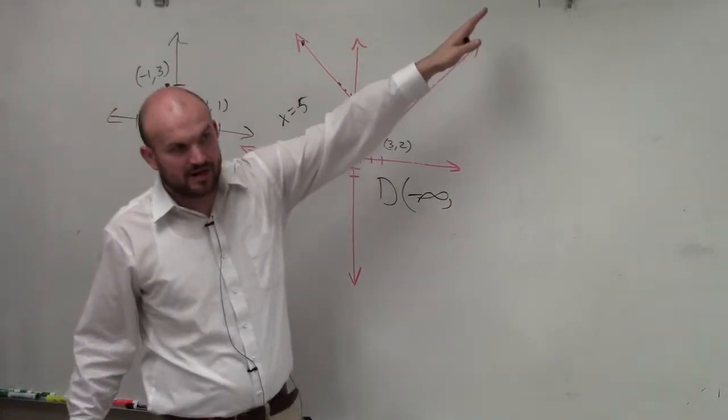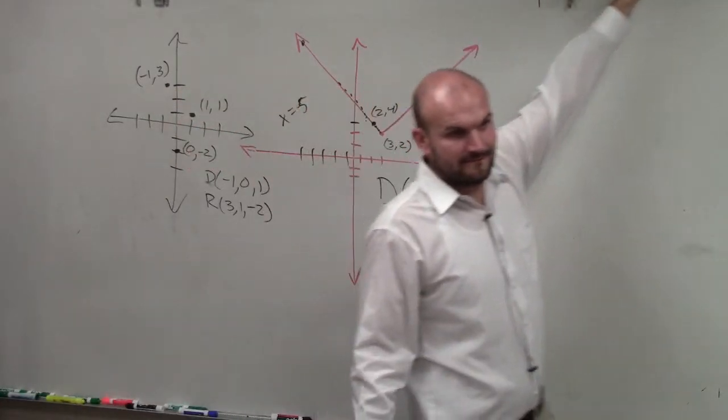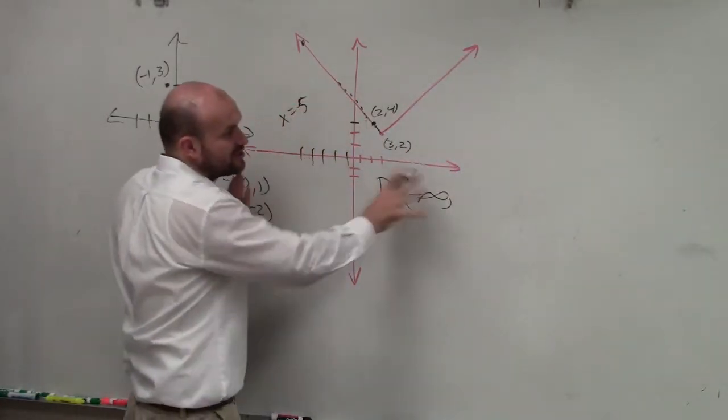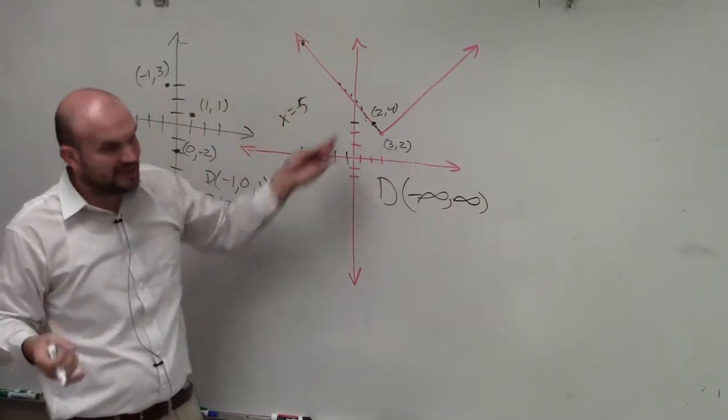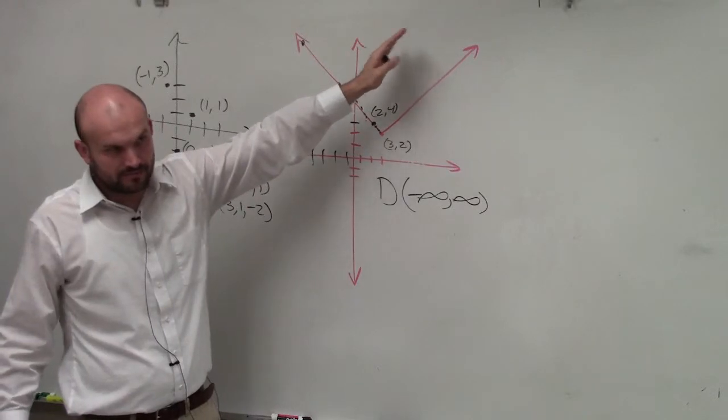Going to the right, how far does this graph go? Infinity. The x values, there's no number, there's no x value that this graph will not have a value for. Okay?